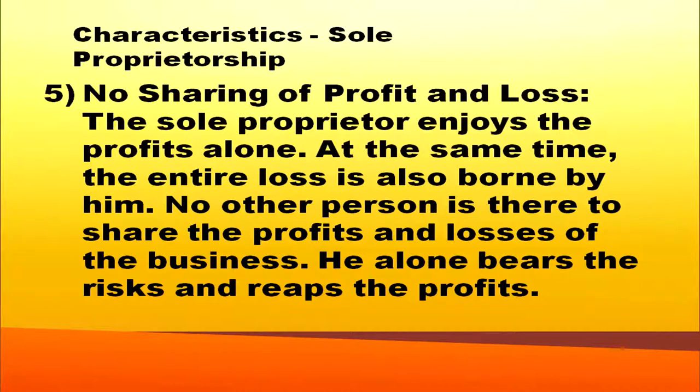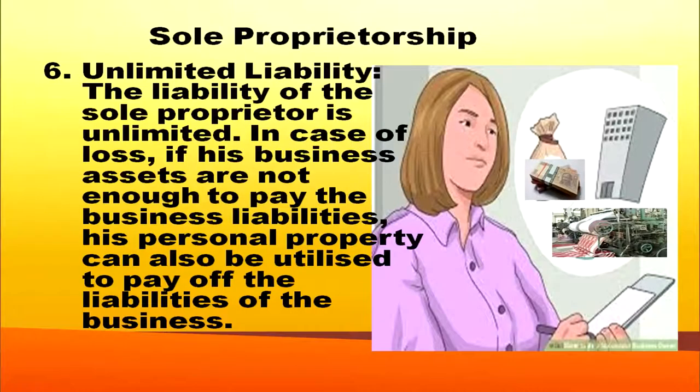The owner alone bears the risk and reaps the profit. Another important feature is unlimited liability, which is also considered a demerit: the liability of the sole proprietor is unlimited. In case of loss, if business assets are not enough to pay business liabilities, personal property can also be utilized to pay off the liabilities of the business. Because of this demerit, other forms of organization have been formed to rectify this limitation.